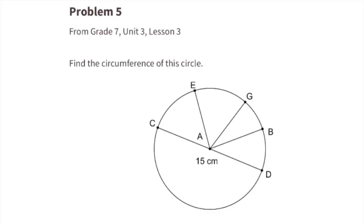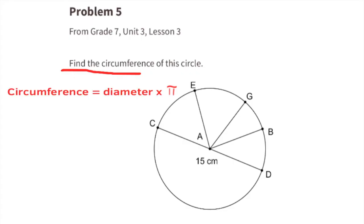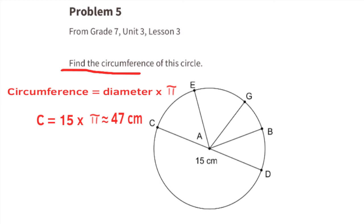Problem number five, from 7th grade Unit 3 Lesson 3: find the circumference of this circle. The diameter is 15 centimeters. 15 centimeters times pi gives us the circumference — approximately 47 centimeters. The circumference of this circle is about 47 centimeters.